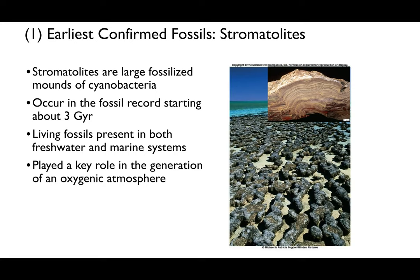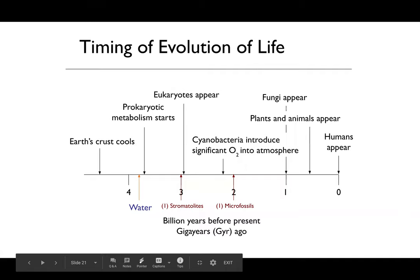Going back to our timeline: from modern times to when the Earth's crust cooled 4.6 billion years ago, we see microfossils at about 2 billion years ago and stromatolites at about 3 billion years ago. That's two lines of evidence, but we need more for such a complex process.